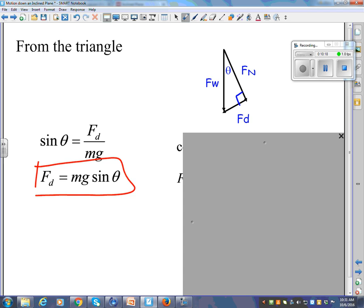Fd is equal to mg sin theta. Where does the mg come from? Fw is equal to M times g. Stay with me, Brady. Don't take little tours. Stay with me, man. It's not long.